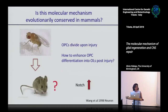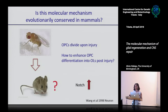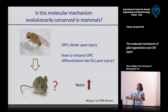Then we collaborated with mammalian labs because we wanted to know: what about mammals? We knew from mammals that OPCs - NG2 glia - divide upon injury. The key challenge was that they divide upon injury and there are plenty there to trigger full remyelination, but the problem is that they don't all differentiate into enwrapping oligodendrocytes. The question is how to promote the differentiation of OPCs into oligodendrocytes so that you have functional remyelination and recovery of function.